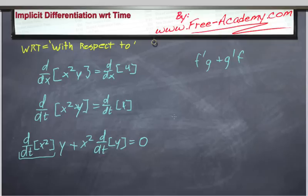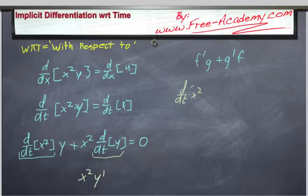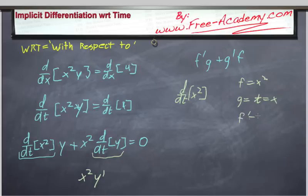Now, the major difference is we're already familiar with the fact that the derivative with respect to time of y is going to equal y prime. But now, taking the derivative with respect to t of x squared, we're going to need to use the chain rule, just like what we were doing in previous lectures. The derivative with respect to t of x squared is the equivalent of saying f equals x squared, g equals x of t. So f prime is equal to 2x, and g prime is equal to the derivative of x with respect to time, which is x prime.